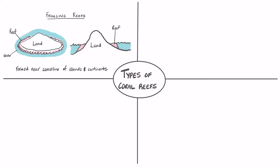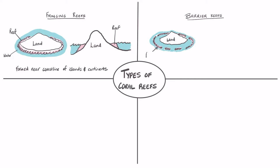Another type of coral reef formation is the barrier reef. The barrier reef can be found parallel to the coastline, but unlike the fringing reefs, they are separated from the land by a deeper and wider lagoon.